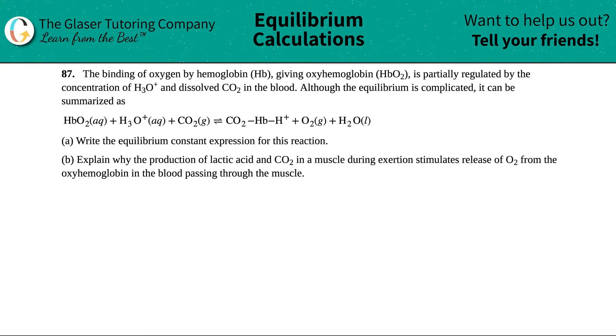Number 87. The binding of oxygen by hemoglobin, which is Hb, giving oxyhemoglobin, which is HbO2, is partially regulated by the concentration of H3O+ and dissolved CO2 in the blood. Although the equilibrium is complicated, it can be summarized by this balanced equation.